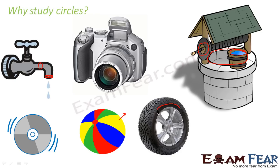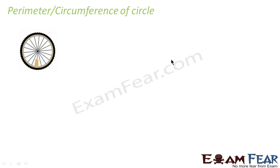The reason why we study circles is that a lot of objects around us have circular orientation — the ball, the camera, the pipes, the well, the fans — a lot of things are circular. So it is good to know how to find the perimeter and area of a circle. Now let's study the perimeter or circumference of a circle.